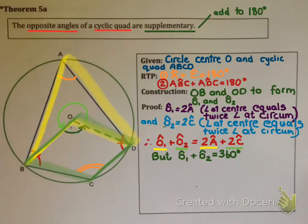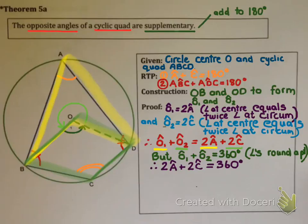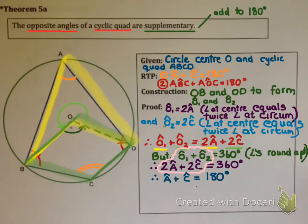Angle O1 and angle O2 add to 360 degrees because they are angles around a point. So 2A plus 2C also equals 360 degrees. This means I'm almost done — if I divide both sides of the equation by 2, I get angle A plus angle C equals 180 degrees. So I've proved that angle A plus angle C equals 180 degrees.